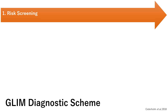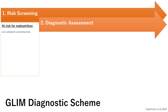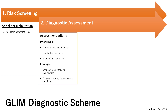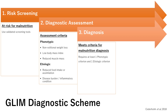The first level of the GLIM diagnostic scheme is risk screening, which can be conducted by nurses, doctors, and dietitians. The second step is the diagnostic assessment, conducted on all patients at risk for malnutrition, usually by the dietitian, and it includes phenotypic and etiological criteria. The third level is to diagnose the patient — they must present with one phenotypic and one etiologic criterion to be classified according to the GLIM criteria.